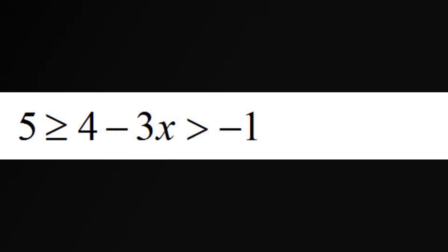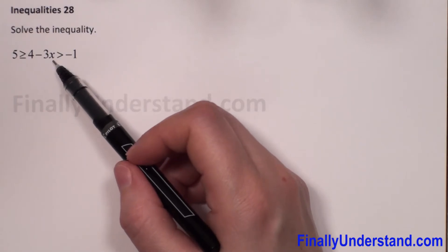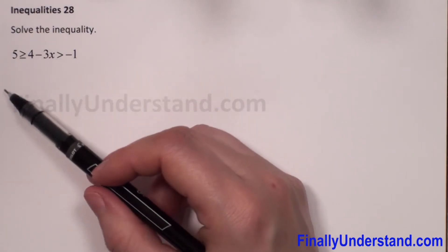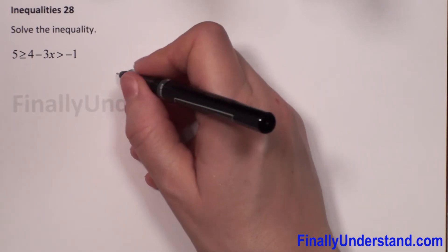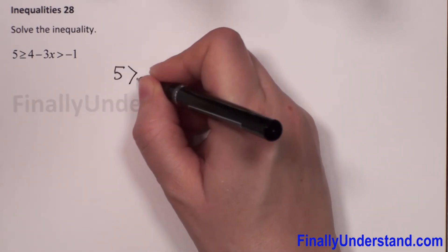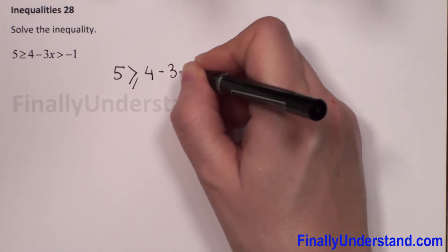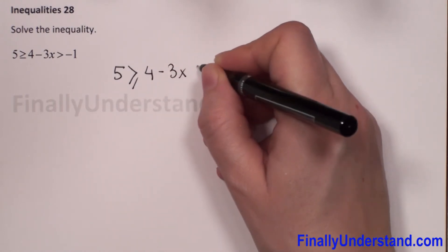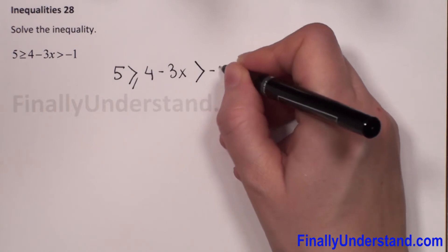We have the next example — we have to solve this inequality. It means we have to find all possible values of x for which this inequality is true. The inequality is: 5 is greater than or equals 4 minus 3x is greater than negative 1.